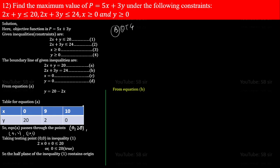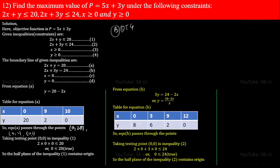Similarly for equation B (2x + 3y = 24): rearranging gives y = (24 − 2x)/3. The table for equation B shows points: (0, 8), (3, 6), (9, 2), and (12, 0). Minimum two points are needed to draw a straight line, but using 3 or 4 points makes it easier to plot accurately. Taking testing point (0, 0) in inequality 2: 2×0 + 3×0 ≤ 24 gives 0 ≤ 24, which is true. The half plane of inequality 2 also contains the origin.